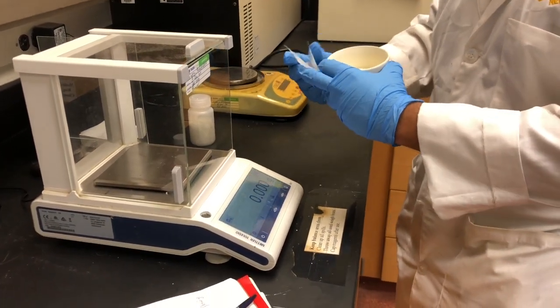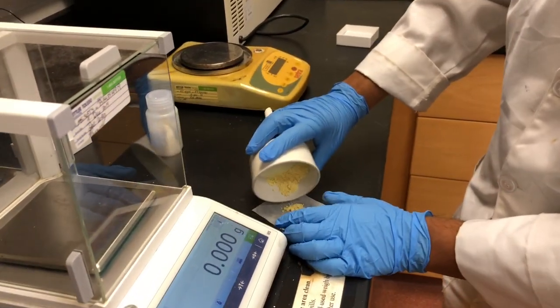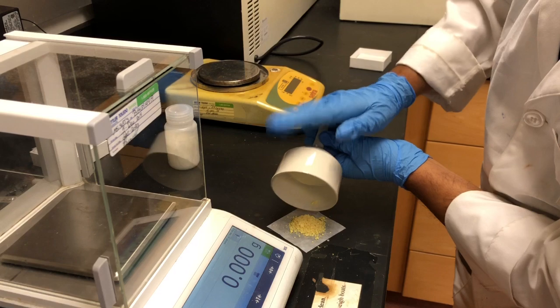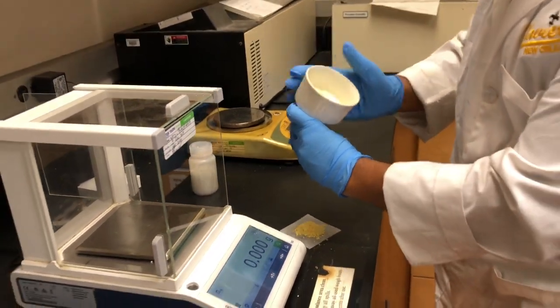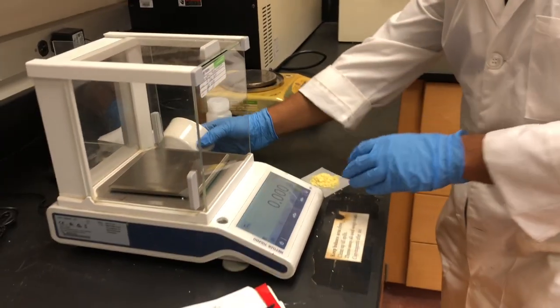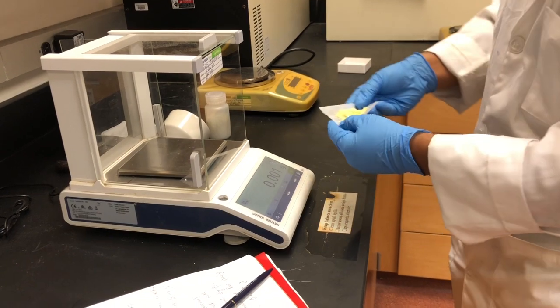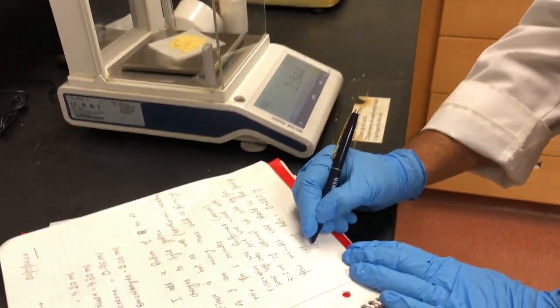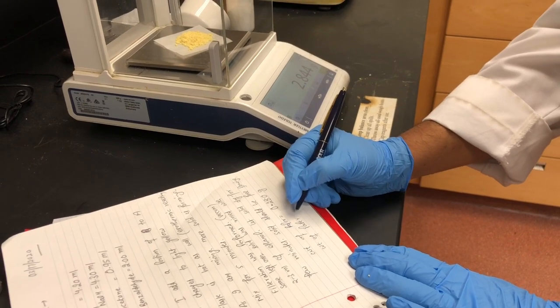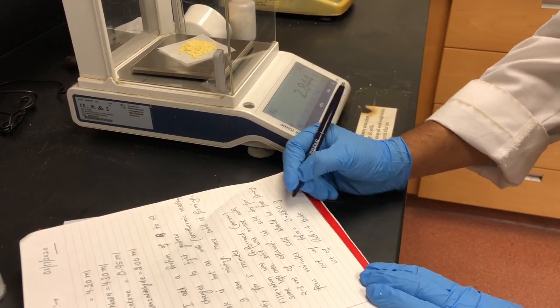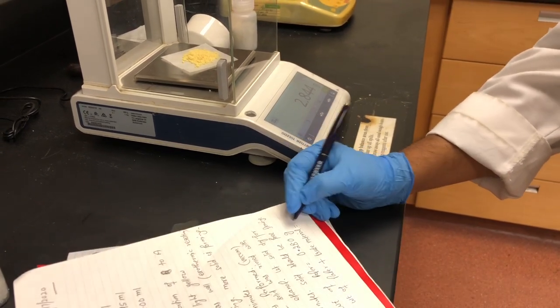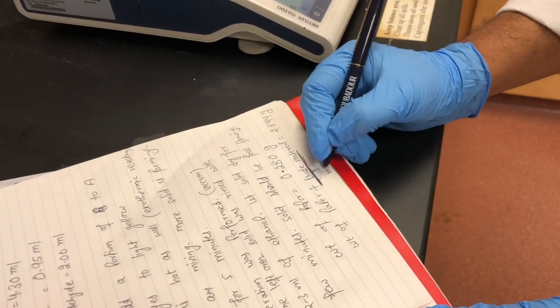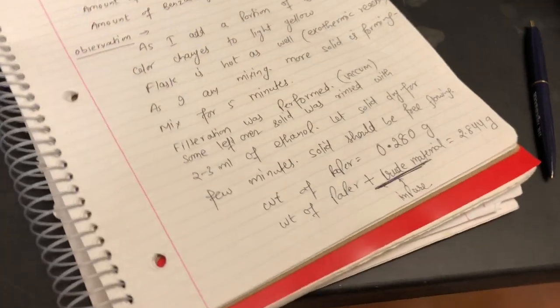Then I am going to transfer, I am folding the paper to make sure and I will transfer most of the solid as much as I can take it out. I am tapping it slowly to make sure and then I am going to check the weight again. And you can see that it is 2.845 gram of product along with weight of paper. So, I can subtract the weight of paper and that will be the weight of my crude product.